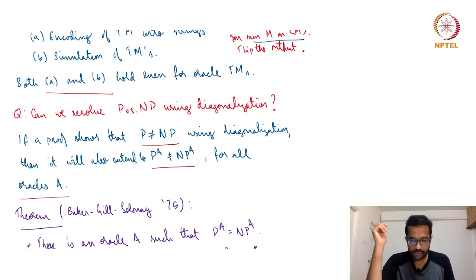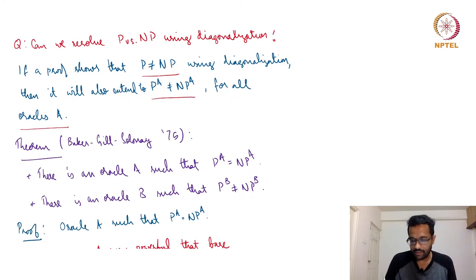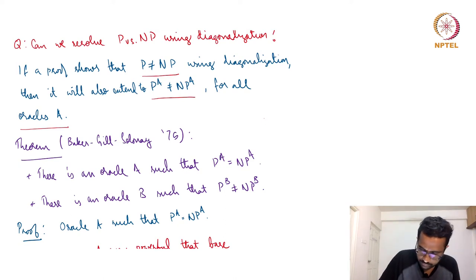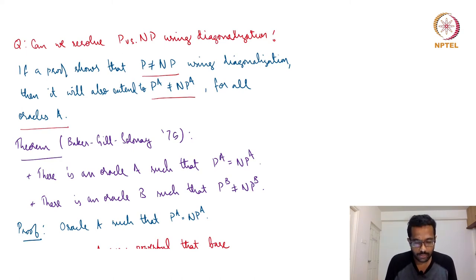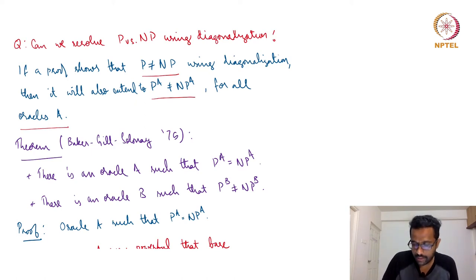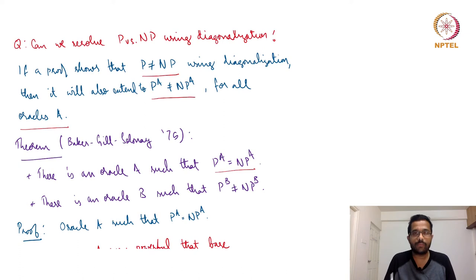How did they do that? They showed two oracles A and B such that P^A equals NP^A, and P^B is not equal to NP^B. If someone showed that P is not equal to NP using diagonalization, then you should be able to relativize, meaning P^A would not equal NP^A for all oracles. But here we have an oracle where P^A equals NP^A, which rules out a proof of P ≠ NP using diagonalization.